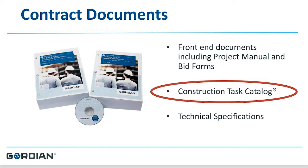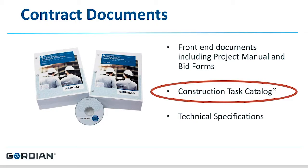Another contract document is the construction task catalog — a customized price book that Gordian puts together on behalf of their clients, with pricing customized to reflect the local economy. The third contract document is the technical specifications, which tell the contractor the quality level of every item in the construction task catalog, and can also include warranty information and care and use instructions. The technical specifications are critical and must be tied to every item in the CTC.